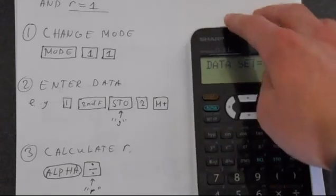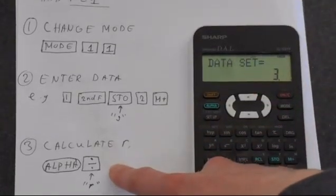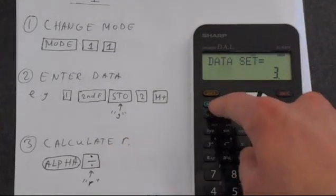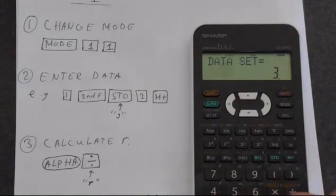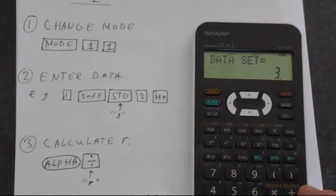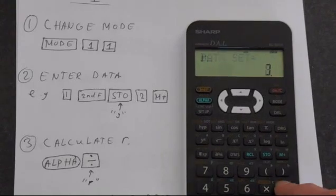So let's calculate the value of R. So we're just pressing the alpha, which lets us access all these statistical functions that are in green. And if we look at the divide button, it's got R above it. So we'll press that.